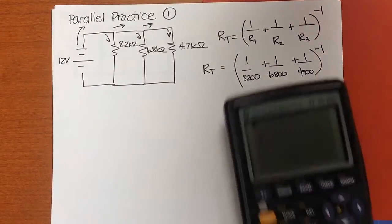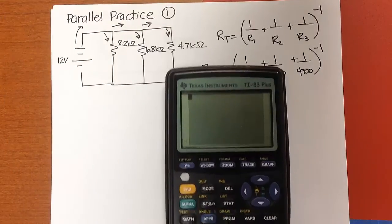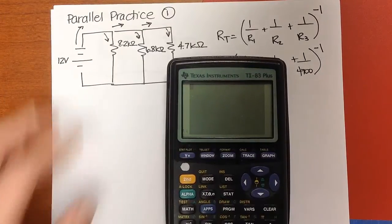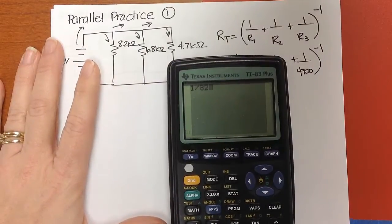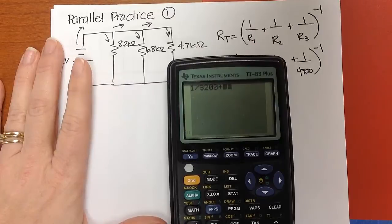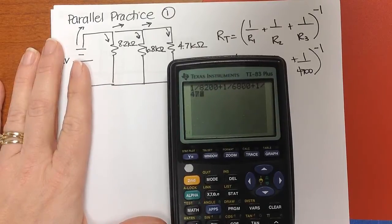So let me plug that into my calculator. I'm not sure how well you can see the calculator, but we'll give it a whirl. So 1 divided by 8,200 plus 1 divided by 6,800 plus 1 divided by 4,700.